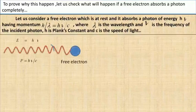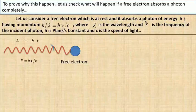To prove why this happens, let us check what will happen if a free electron absorbs a photon completely. Consider a free electron at rest that absorbs a photon of energy hν, having momentum h/λ = hν/c, where λ is the wavelength, ν is the frequency of the incident photon, h is Planck's constant, and c is the speed of light.